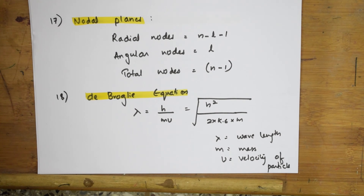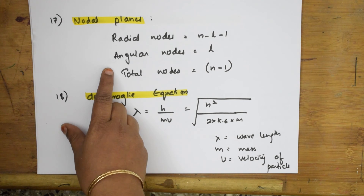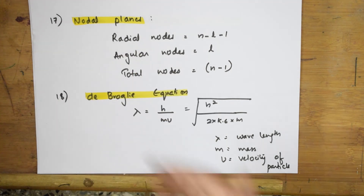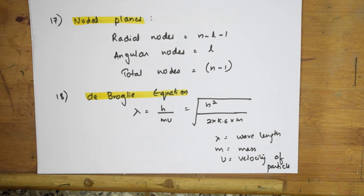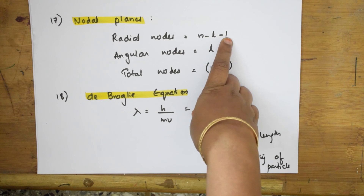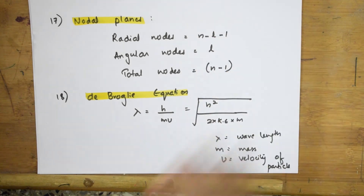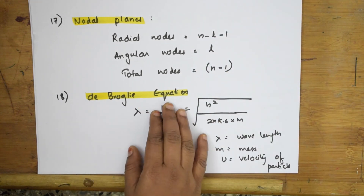Take the atomic number, write the electronic configuration, fill electrons into s, p, d, and f orbitals, then find the number of unpaired electrons. For nodes: radial nodes = n - l - 1; angular nodes = l; total nodes = n - 1, where n is the principal quantum number and l is the azimuthal quantum number. I'll be doing the concept video separately so you'll understand better.